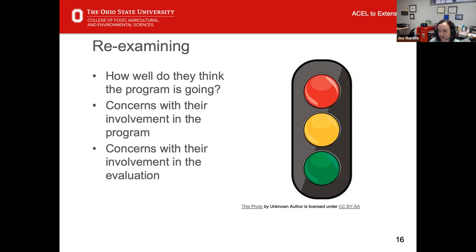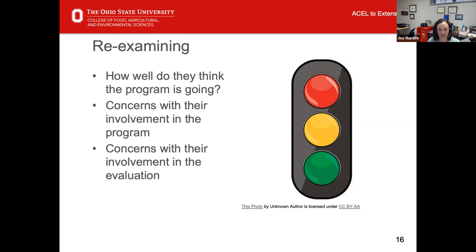Going back to my example of the grant PI and their lack of willingness to participate in the evaluation — if I asked how well does the PI think the program is going to work, I'd say green — they think it's going to work. Are there concerns with their involvement in the program? I'm probably going to put yellow or red because I feel like they aren't considering everything they should. And concerns with their involvement in the evaluation? That's definitely going to get a red dot. This creates a really nice visual as you start to compare all your stakeholders together and see where certain stakeholders might have concerns and where you might need to proceed with caution.